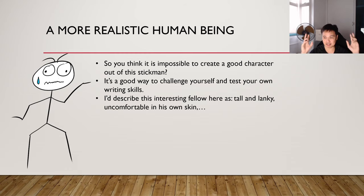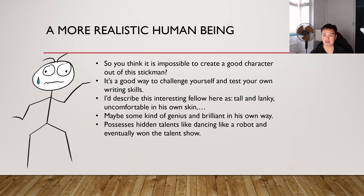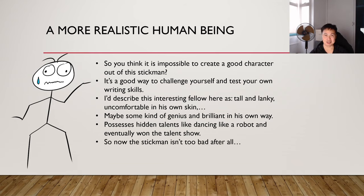I would describe this interesting fella as somebody who is tall and lanky. Maybe he's uncomfortable in his own skin a little bit because he's so slender. But maybe he's some kind of a genius, brilliant in his own way. So it's not just about his physical appearance — it's about what's up here as well. He possesses some hidden talents, like dancing like a robot, and eventually won the talent show in your story. So now the stick man isn't too bad after all. I urge you to reconsider your options when creating a character for your composition.